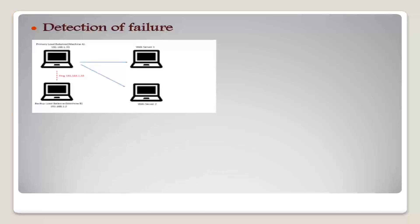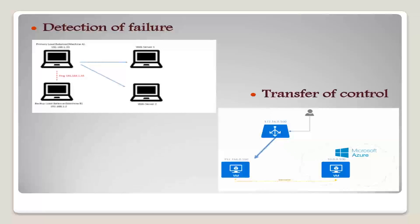Next is the transfer of control. To take over control, the backup site first performs recovery using its copy of the database and all the log records it has received from the primary. Thus, completed transactions are redone and incomplete transactions are rolled back. When the backup site takes over processing, it becomes the new primary.